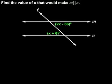So we can set up the equation 2x minus 36 equals x plus 6.